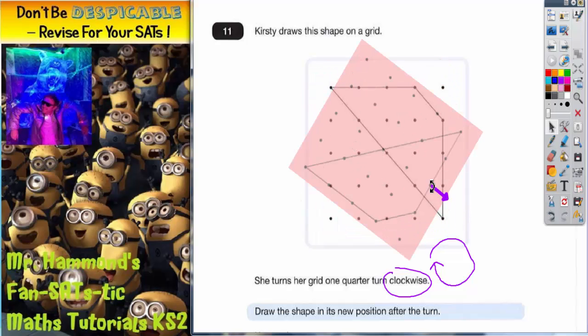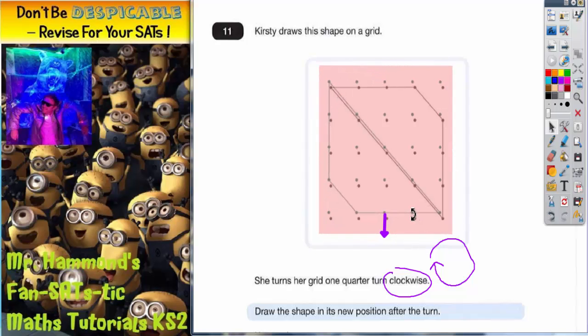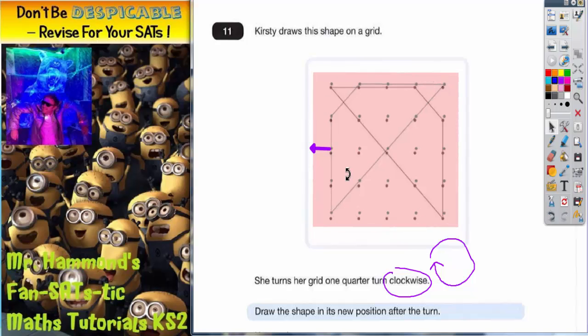Another quarter clockwise would mean the arrow then points south. Then another quarter would mean the arrow points west, and another quarter would bring the shape all the way back around to the beginning.